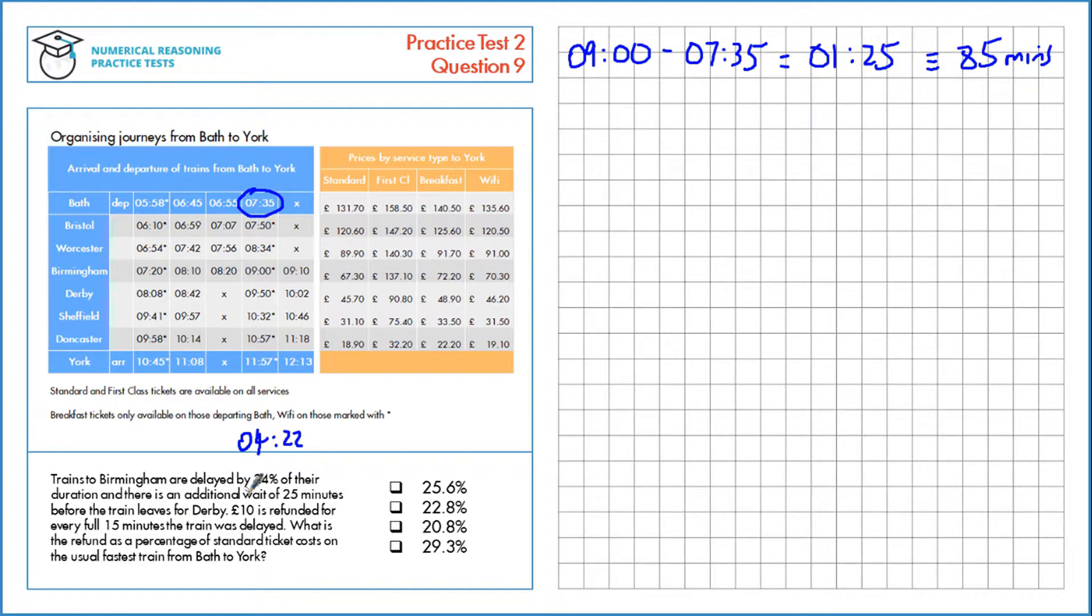We know that these are delayed by 24% of their duration, so we want to find 24% of that, which is 0.24 multiplied by 85 minutes, which is a 20.4 minute delay. From there, there's an additional wait of 25 minutes before the train leaves for Derby, so we can add that on too. That gives us a total delay of 45.4 minutes.